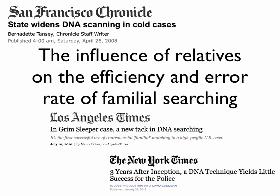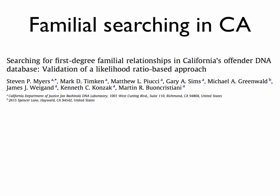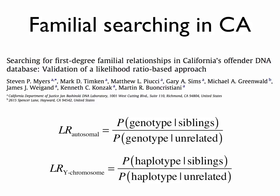Unfortunately, the vast majority of jurisdictions which practice familial searching using their own not-necessarily-robust methodology do not make their methods transparent, so I can't investigate or speak about them. Fortunately, Steve Myers and colleagues at the California Department of Justice did publish the details of the method used in California. They use a likelihood approach considering both autosomal and Y chromosome DNA, and compute likelihood ratios comparing the probabilities of the observed partial match assuming a specific relationship like siblings, and assuming no genetic relationship.